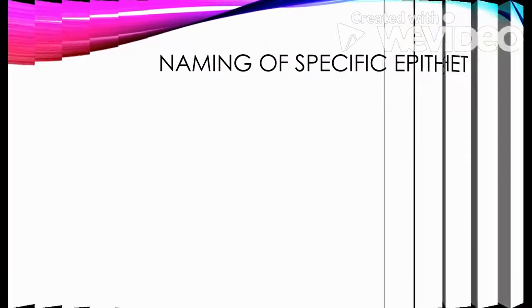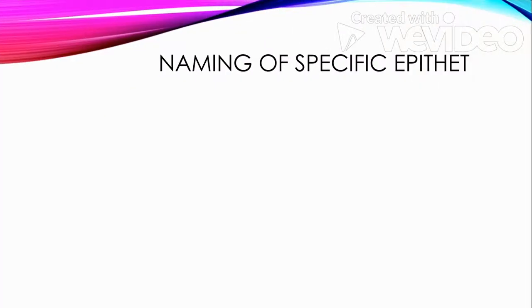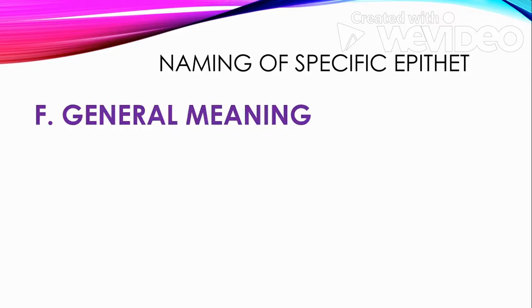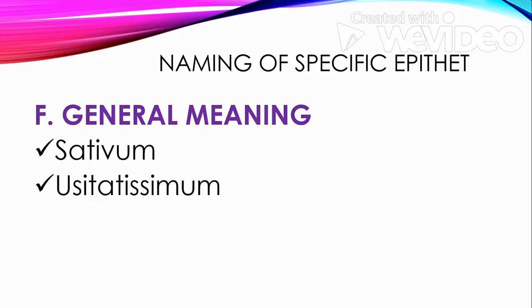Lastly, we have organisms whose specific epithet has a general meaning. Sativum means cultivated. Usitatissimum means most useful. And vulgare means the plant is wild. That would be all for this topic, and see you in the next video.